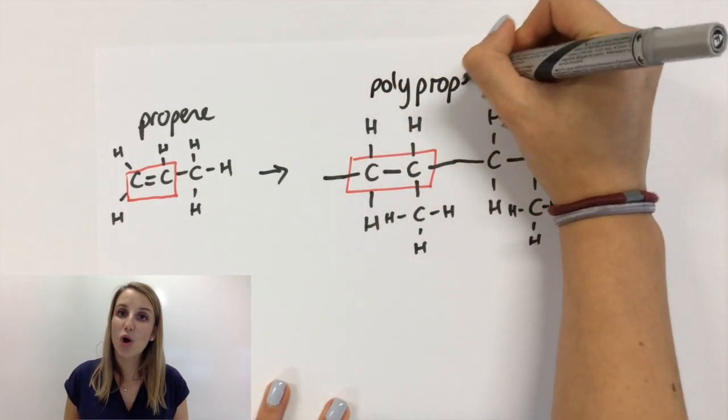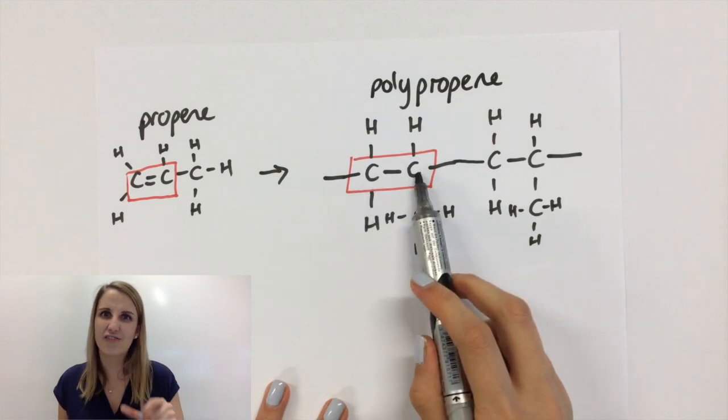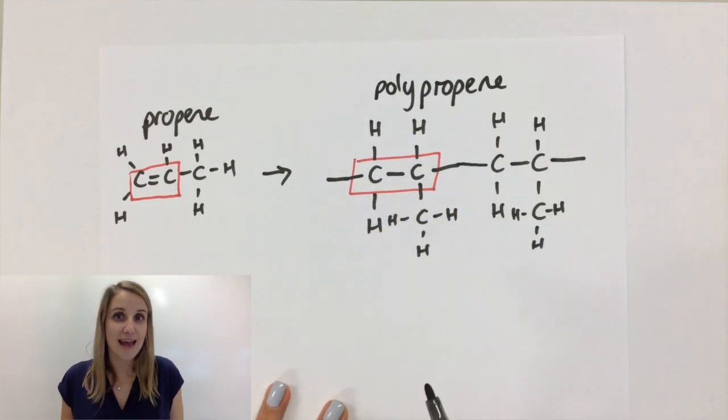We call this polypropene, just adding the word poly in front of the monomer name, to name the polymer.